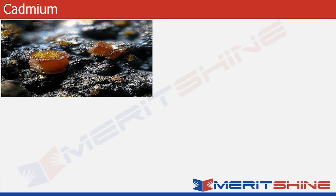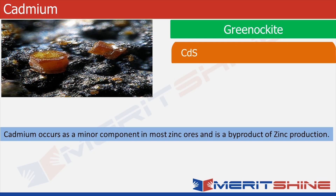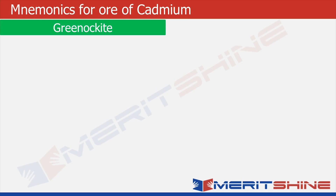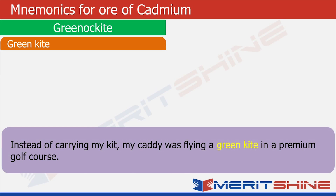Now time to move to our final ore, which is an ore of cadmium. The name of the ore is greenockite, which is a sulphide of cadmium. Note that cadmium occurs as a minor component in most zinc ores and is a byproduct of zinc production. Greenockite sounds like green kite, which fills our orange box. The situation is I go to a premium golf course and have hired a caddy — caddy and premium should remind us of cadmium. Instead of carrying my kit he is flying a green kite on the golf course. Green kite will remind us of greenockite.